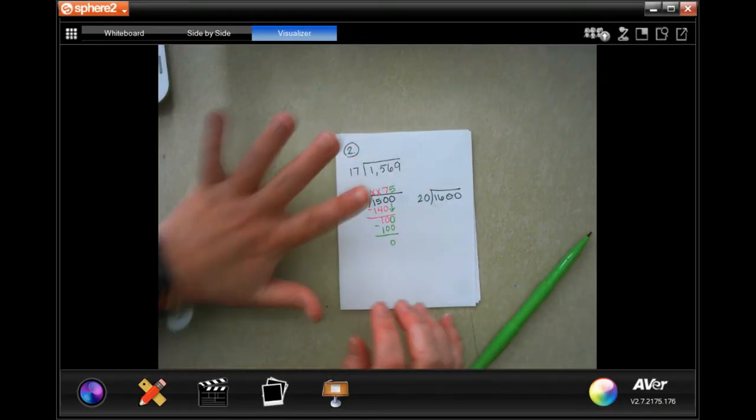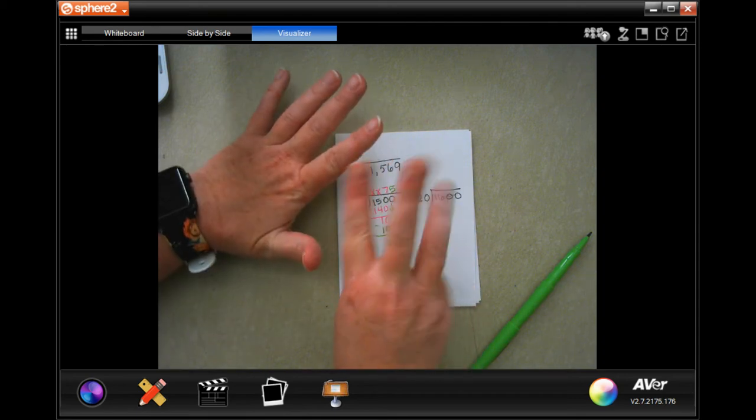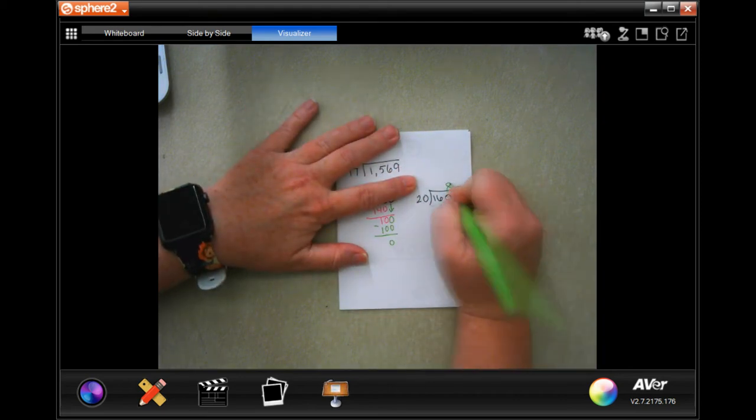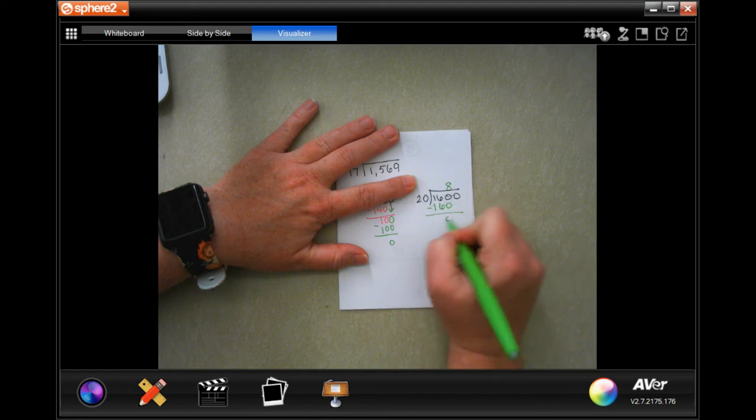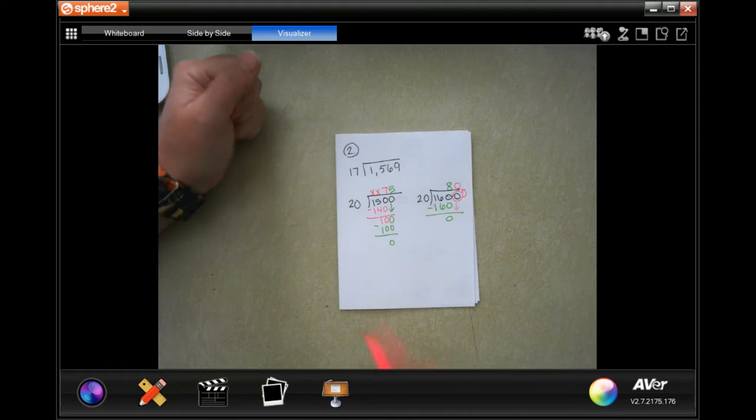The other one is doing the same, 20, but into 1600 instead of 1500. We're going to go—you know that 5 times 20 is 100—so that one is going to be 8. 8 times 20 is 160, subtract and get zero. I don't have to bring that down, I'll just bring it up there. So 75 and 80, those are your two estimates.